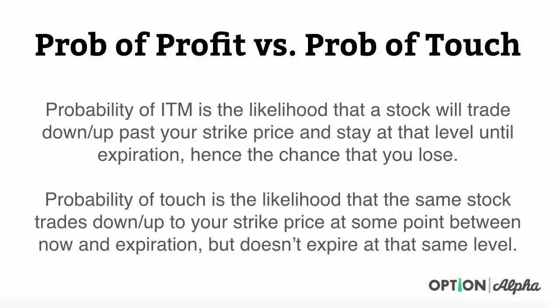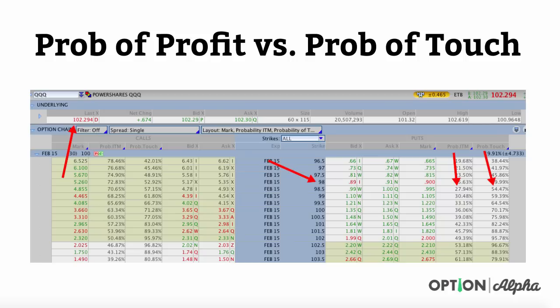Probability of touch is a little bit different. This is the likelihood that that same stock trades up or down to your strike price at some point between now and expiration but doesn't expire at the same level. It's the likelihood that the stock comes up to or down to your strike price and just touches that level one time but then retreats. This is really important as we get deeper into options pricing and why we are fans of letting trades go all the way to expiration.